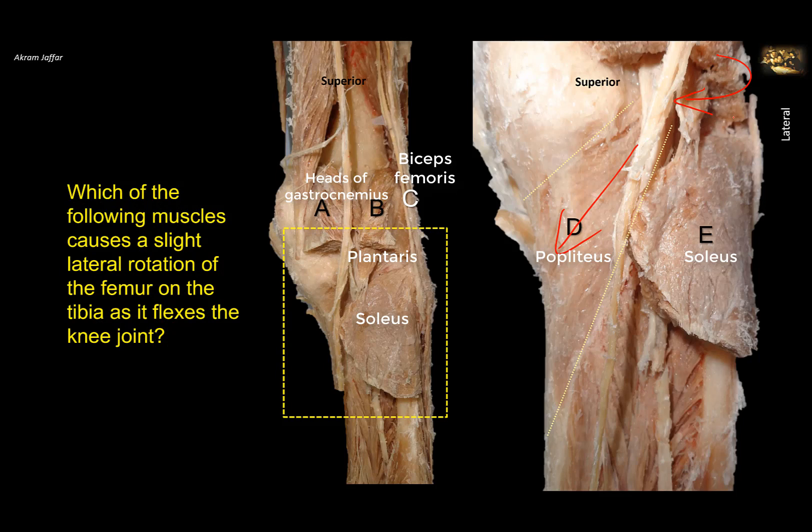After that, this muscle also participates in flexion because it crosses behind the knee joint. However, it is not an important flexor — it is important as a lateral rotator of the femur — because there are other important flexors of the knee, like the gastrocnemius and the hamstring compartment.